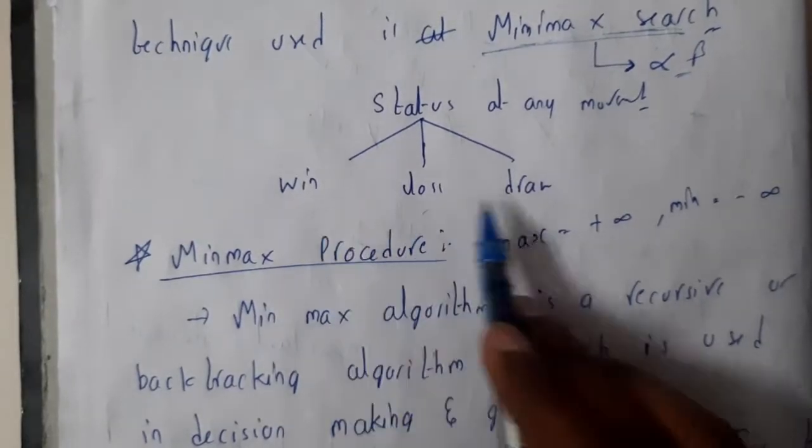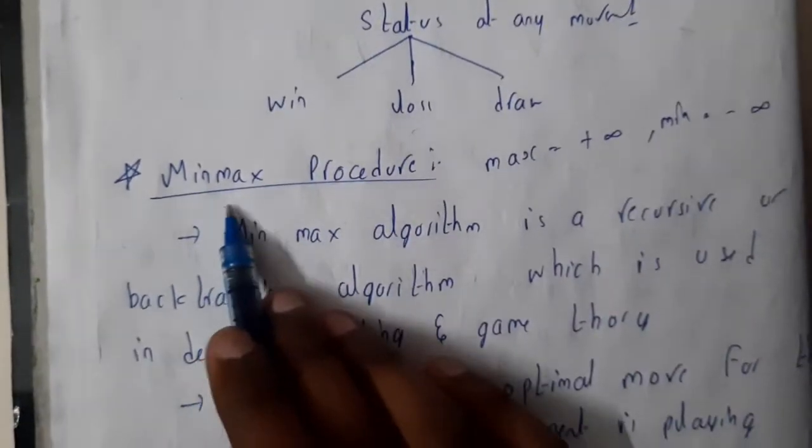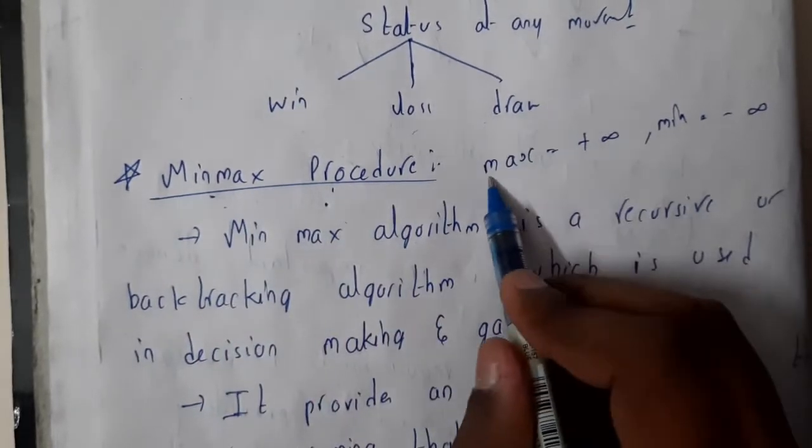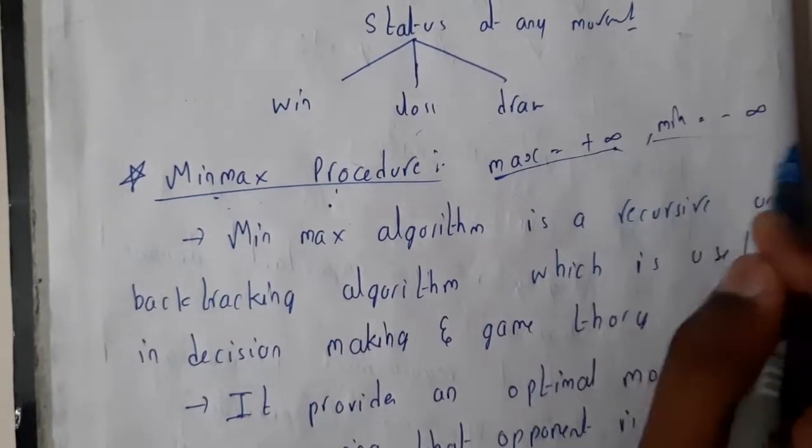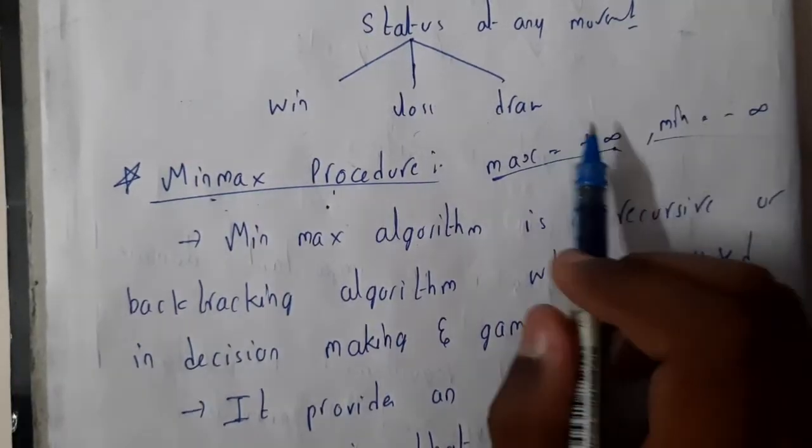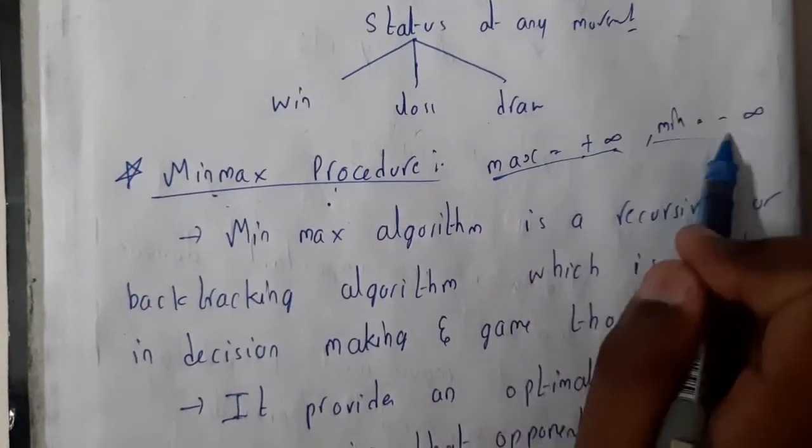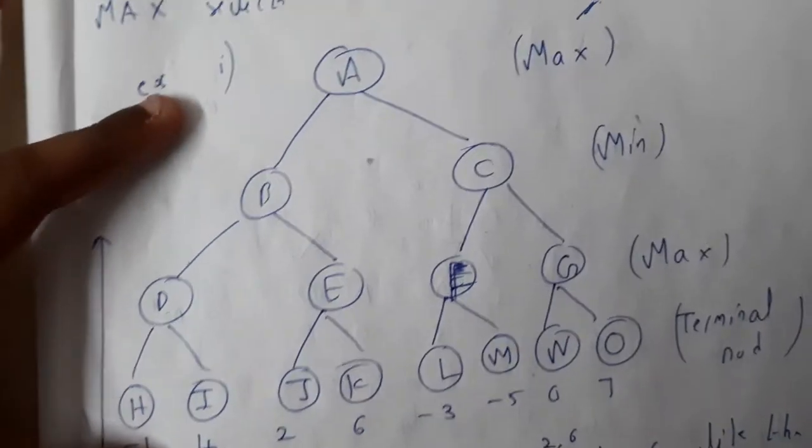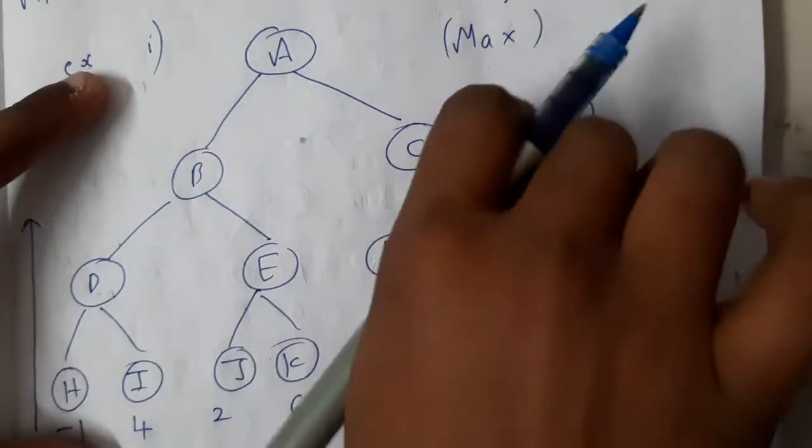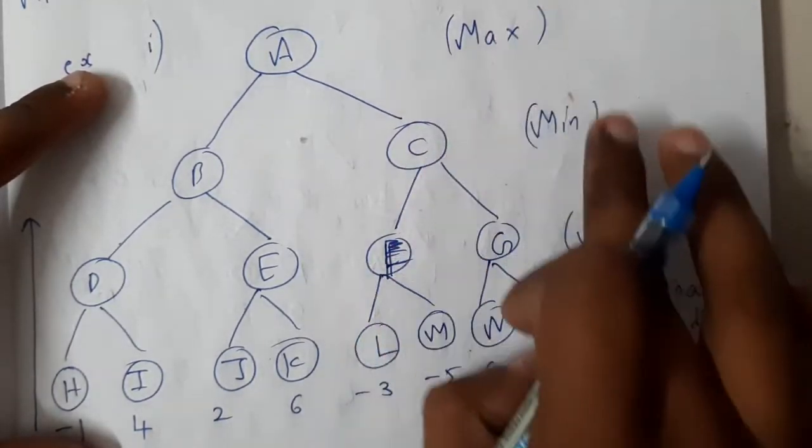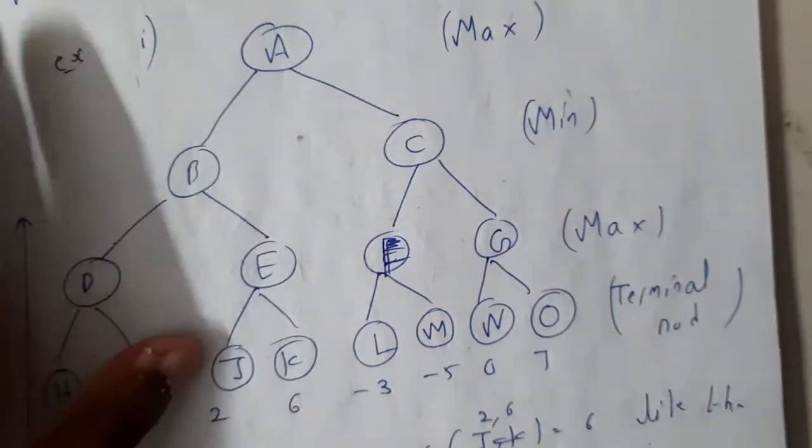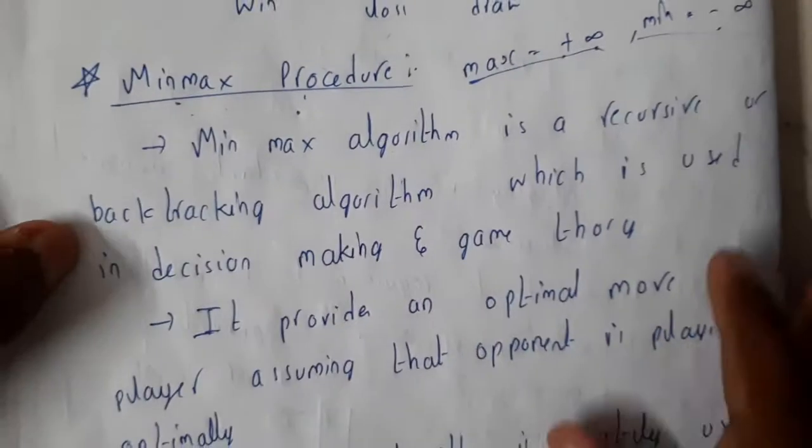Minimax procedure - max means the maximum value, min means minimum value, plus infinity minus infinity. Here max and min are nothing but the players - player one, player two. Minimax algorithm is a recursive or backtracking algorithm which is used for decision making and game theory.